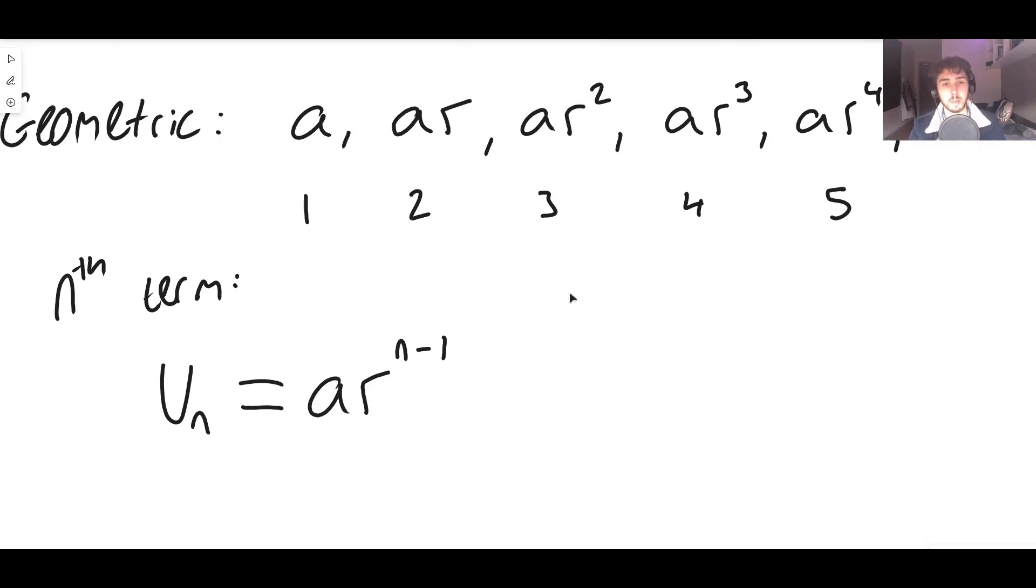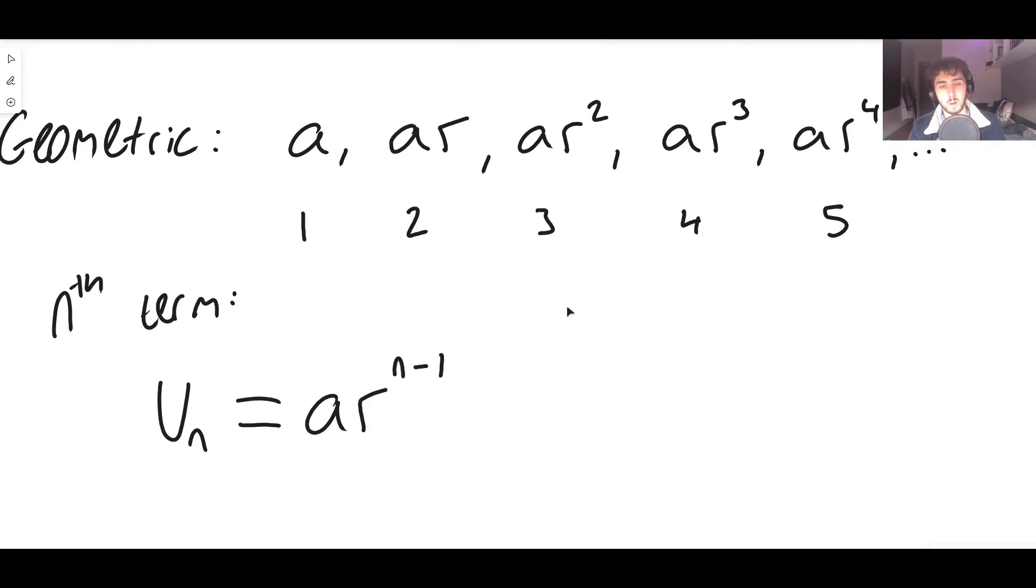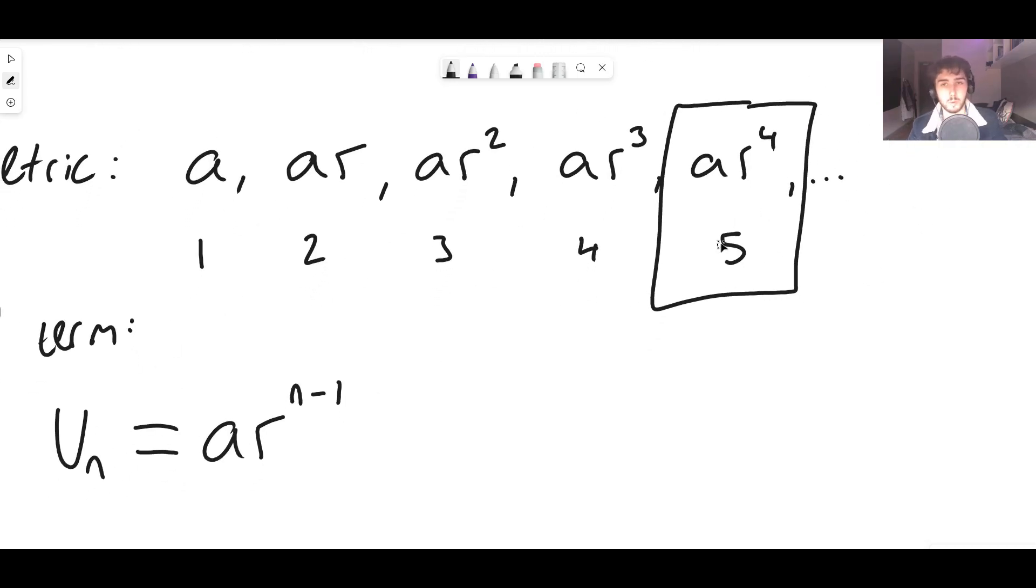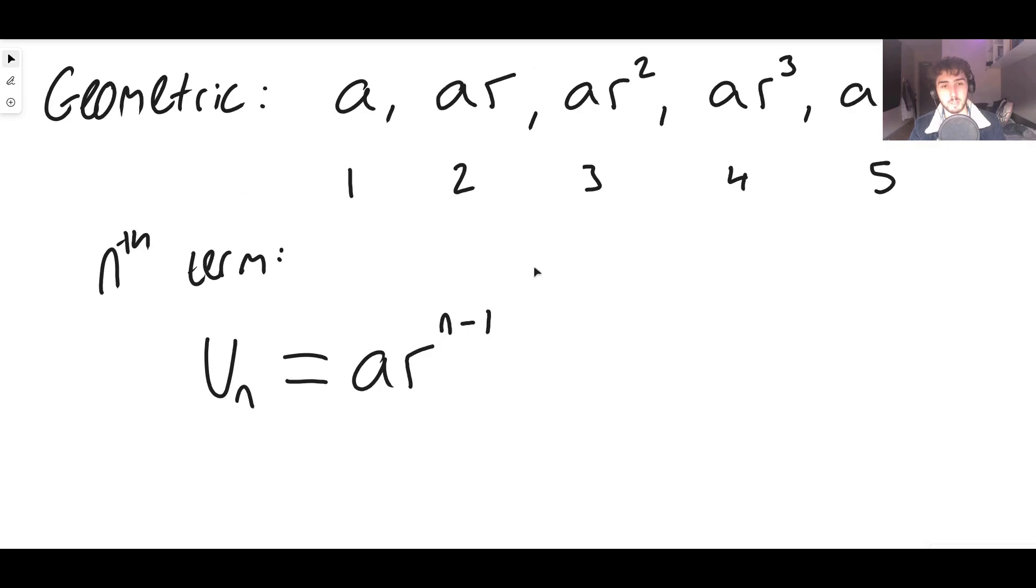For example, if you wanted the, let's say, fifth term, it would be a r to the four. And you can literally see it here. We have literally got this example right here. The fifth term here is a r to the four. And of course, just again to clarify, a is the first term in the sequence of numbers. And r is the common ratio.